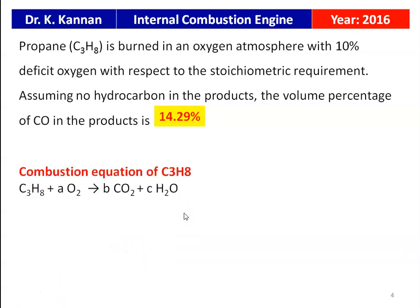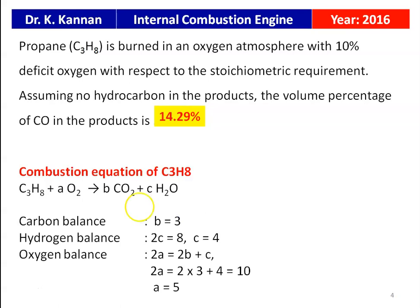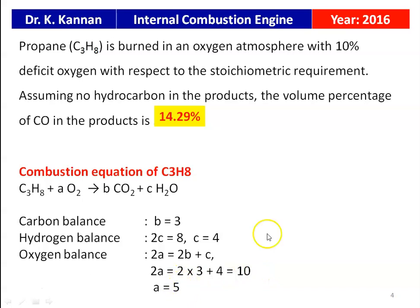We will see how. The combustion equation for C3H8 propane: C3H8 + AO2 → BCO2 + CH2O. Writing the balance — carbon balance: left hand side 3 moles of carbon, right hand side B moles, so B = 3. Hydrogen balance: 2C = 8, so C = 4. Oxygen balance: 2A = 2B + C = 6 + 4 = 10, so A = 5. The chemically correct combustion equation is C3H8 + 5O2 → 3CO2 + 4H2O.